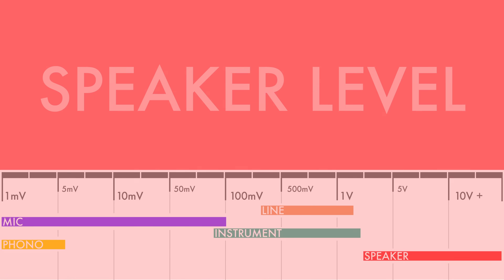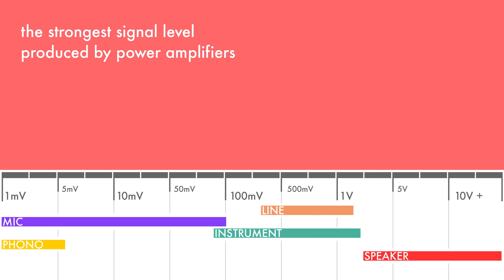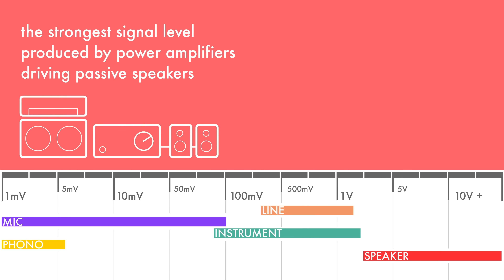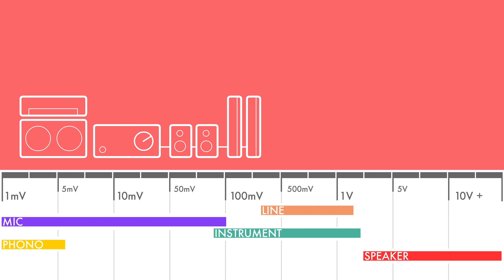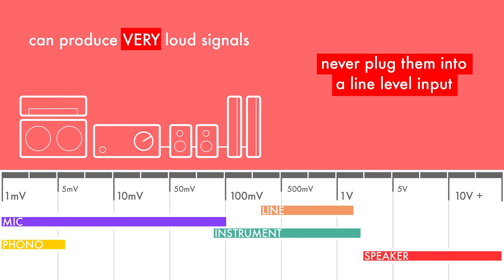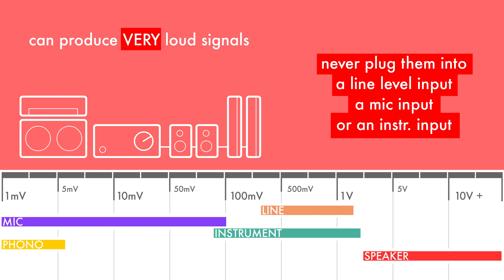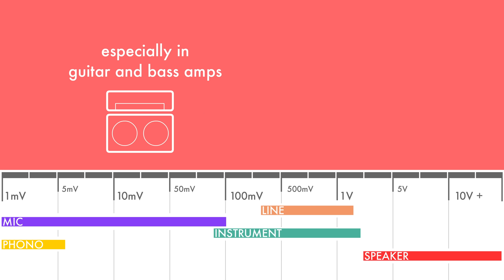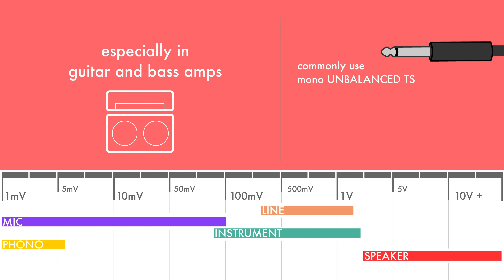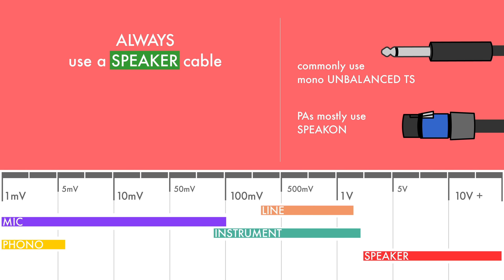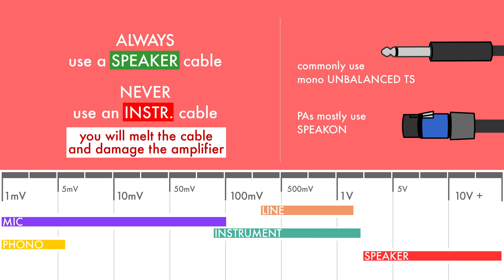On the other end of the scale, speaker level is the strongest audio signal level. It's produced by power amplifiers driving passive speakers, such as in guitar and bass amps, passive studio monitors, and consumer hi-fi systems. Speaker level outputs can produce signals with very high voltages, which could potentially destroy your gear if you plugged it into a line level, or even worse, a mic or instrument level input. Also, a lot of speaker level connections, especially in guitar and bass amps, are made using TS connectors, which are identical to the ones used on instrument cables. Always double check that you're using a speaker TS cable and not an instrument one. Using an instrument cable on a speaker connection, especially on a high wattage amp, is more than likely going to melt the cable, and also damage the amp in the process.